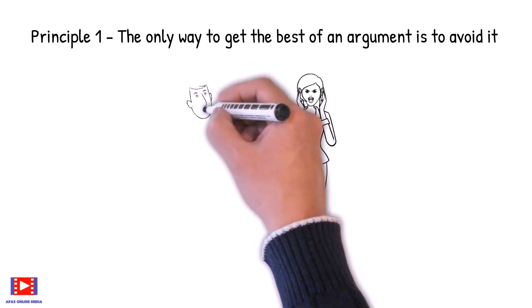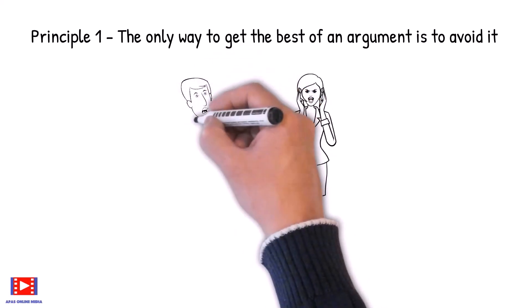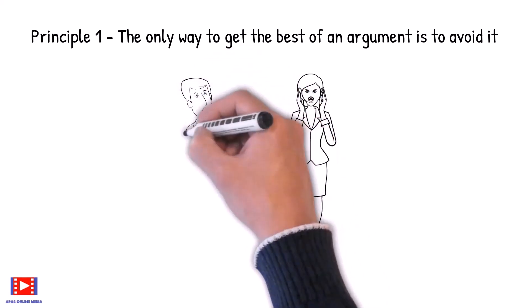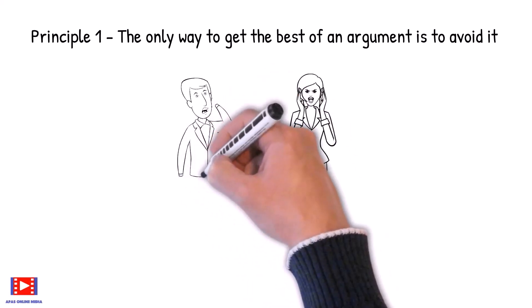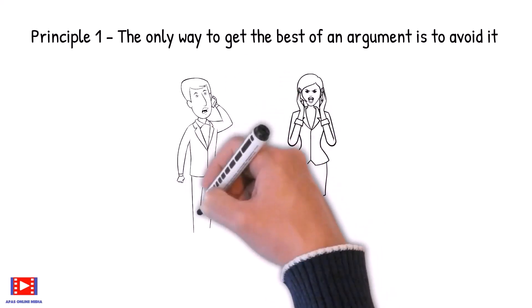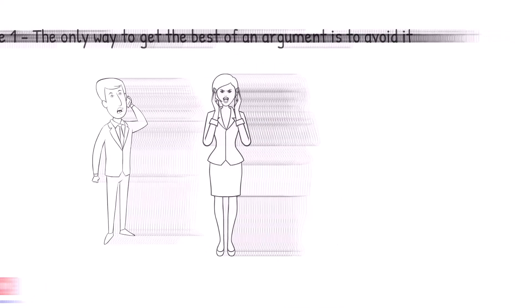We should also control our temper and remember that we want to solve this amicably. Now we need to listen first to what the other person has to say, understand and then speak our subject. And that is how we should be able to end any disagreement and get out of the habit of getting into any kind of argument.